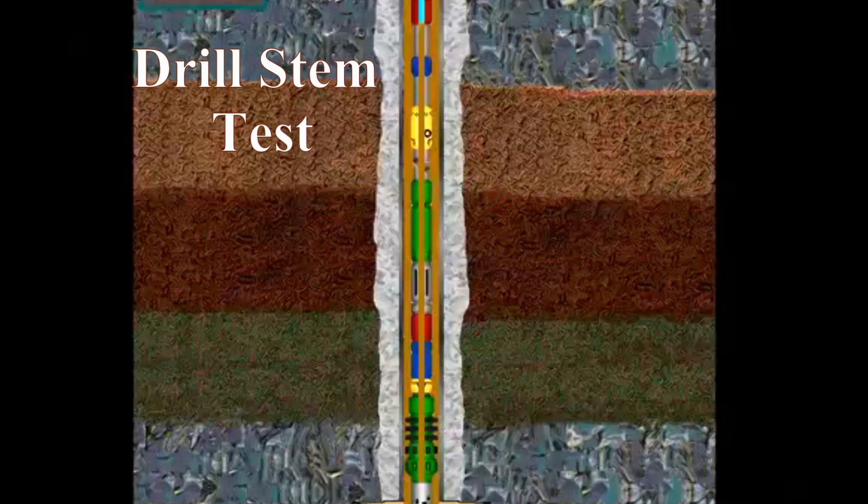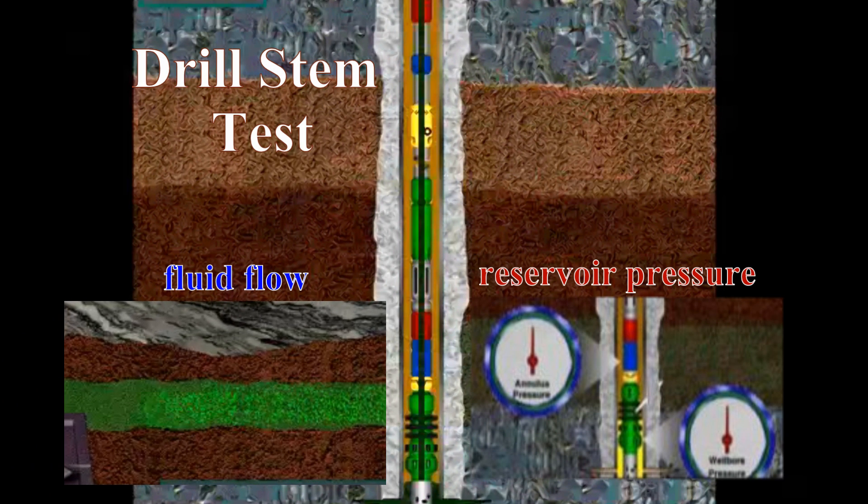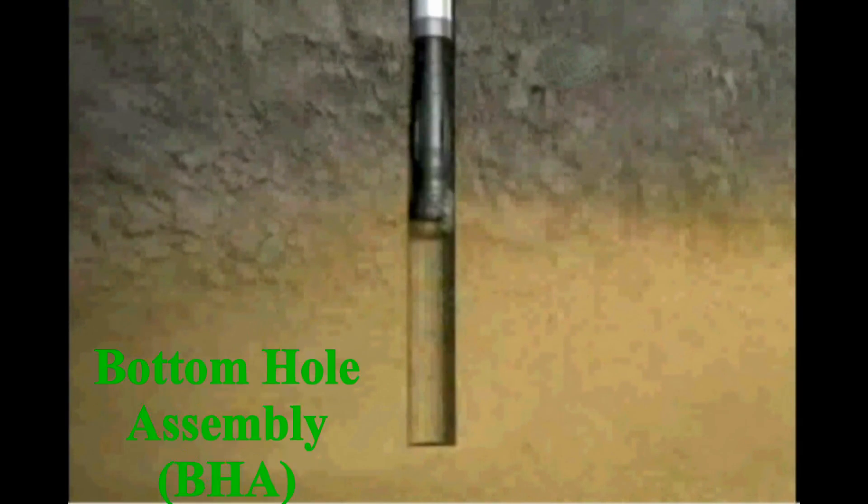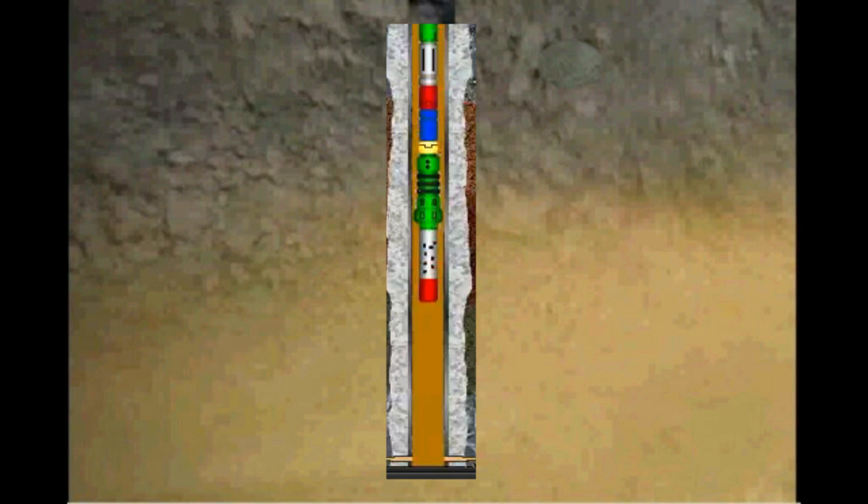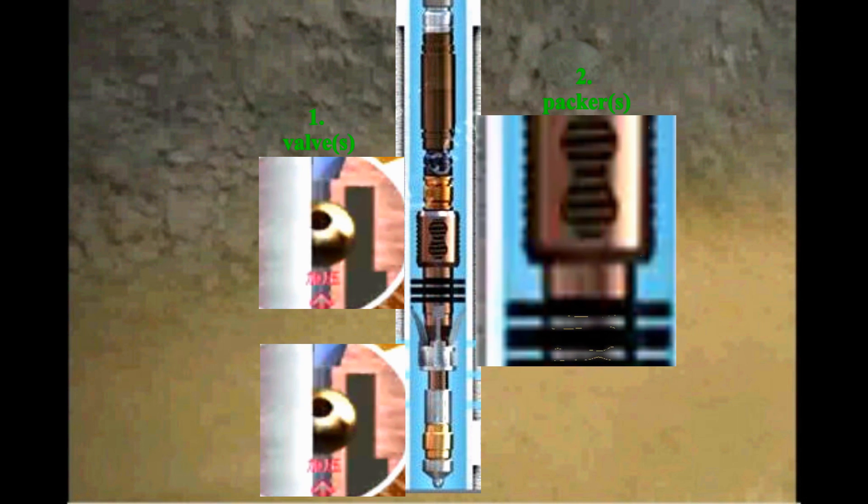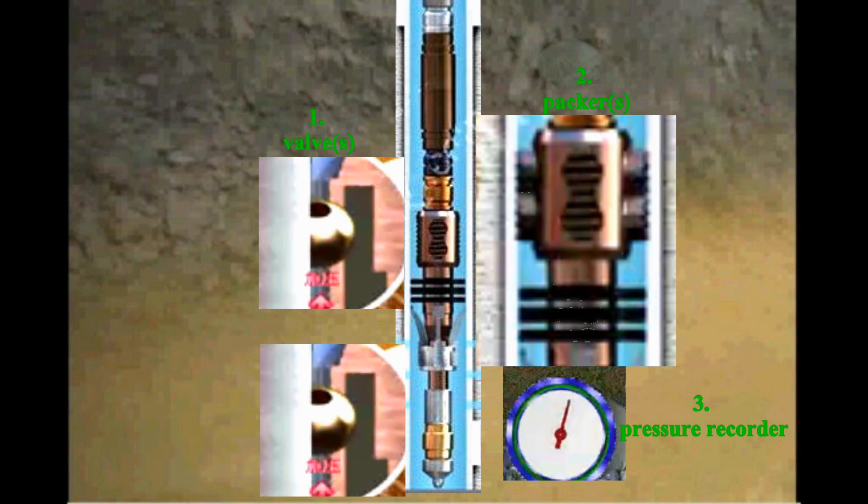First, drill stem tests measure fluid flow and reservoir pressure. Let me explain the steps involved in a drill stem test. It begins when the drill bit, or bottom hole assembly, the BHA, is pulled out and replaced with the DST, which consists of one, two or more valves, two, a packer or packers to form a seal between the drill pipe and the open hole, and three, a pressure recorder.